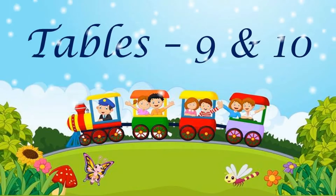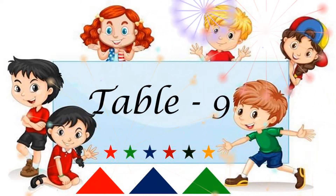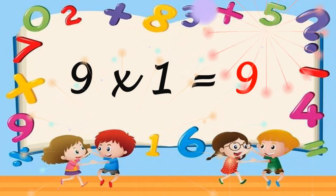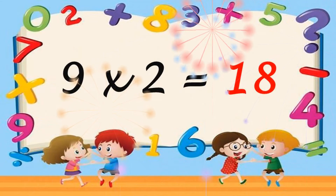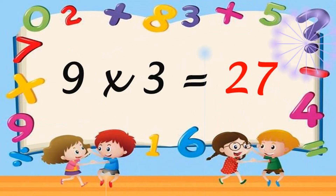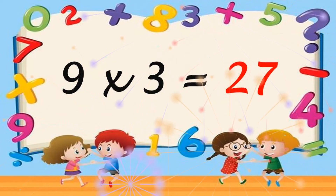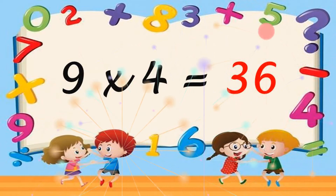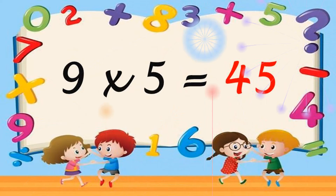Let's start. Coming to the first table, table of 9. 9 1s are 9. 9 2s are 18. 9 3s are 27. 9 4s are 36. 9 5s are 45.